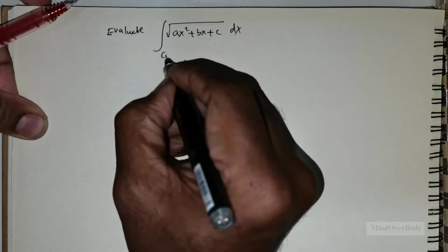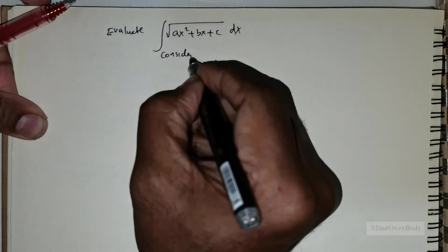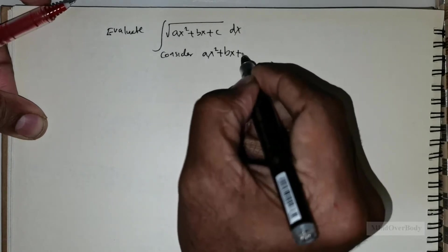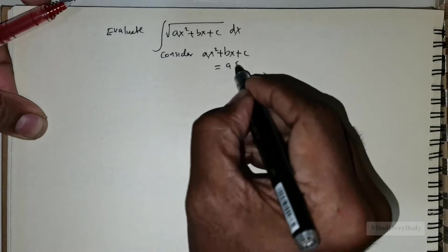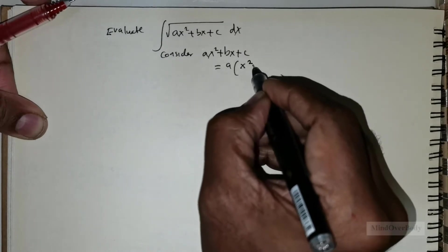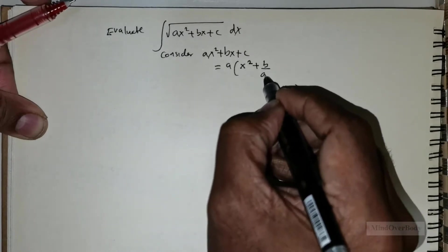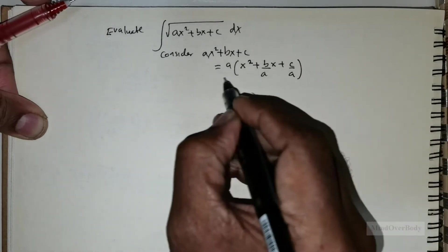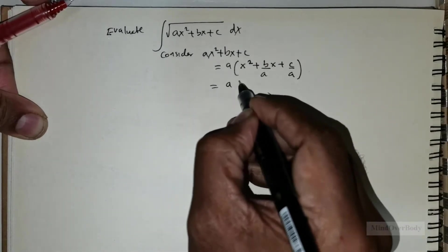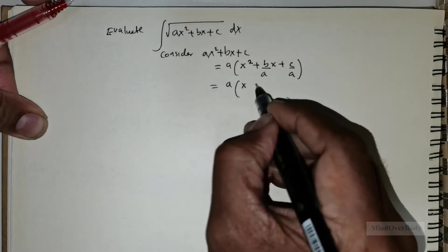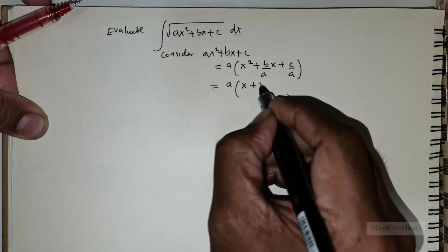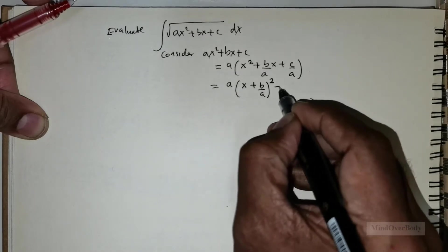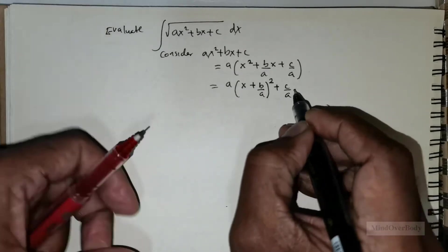First, I want to consider ax² + bx + c. I will take a out and rewrite this as x² + (b/a)x + c/a.